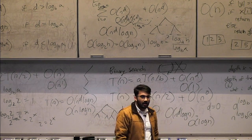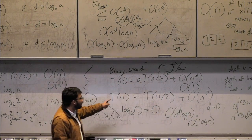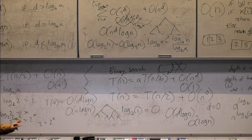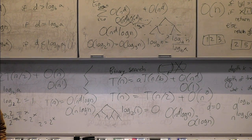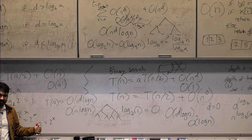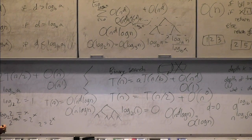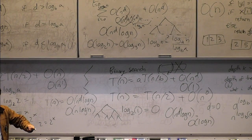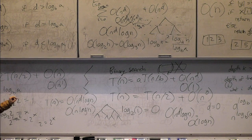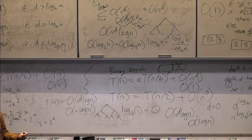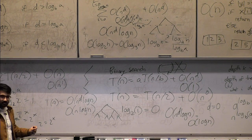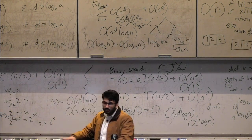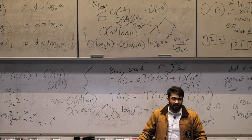Quick note: splitting MergeSort into quarters or thirds or any fraction still yields the same asymptotic complexity because B equals A in each case. Log base 3 of 3, log base 2 of 2, log base 5 of 5 — all equal 1. So there's no asymptotic gain from changing the split ratio when A and B scale together.